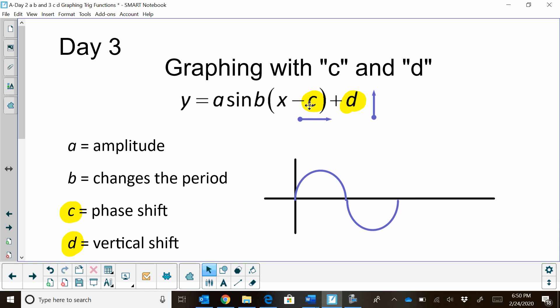In the equation y equals a sin(bx - c) + d, c is your phase shift and d is your vertical shift. I've got a parent graph of sine graphed here. A c would move the graph to the right or to the left, and the d will move it up and down. Sometimes you have both a horizontal and a vertical shift, and sometimes you just have one or the other.